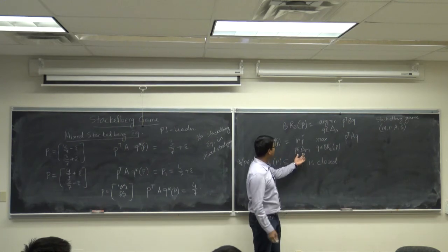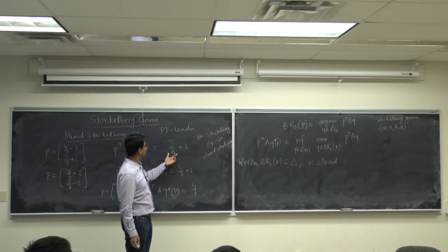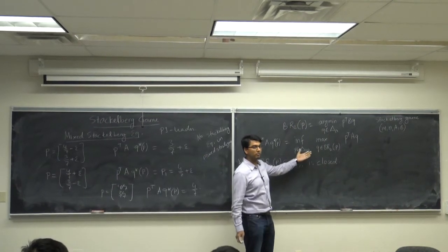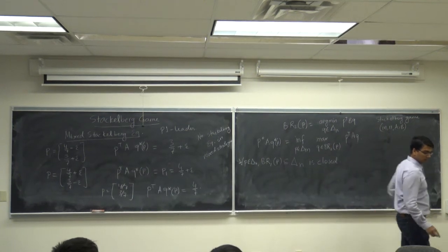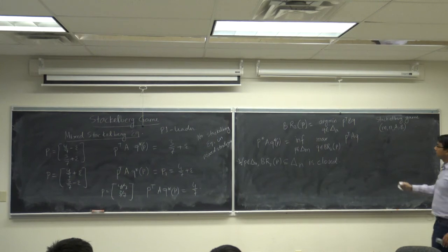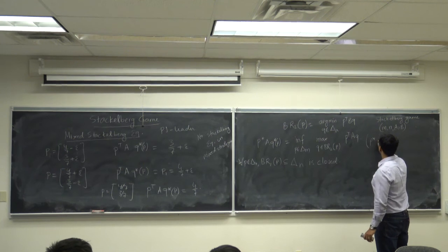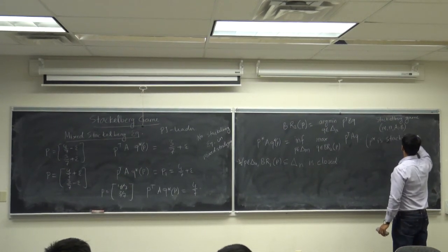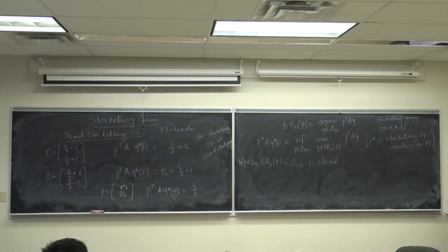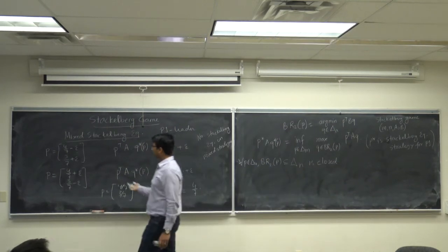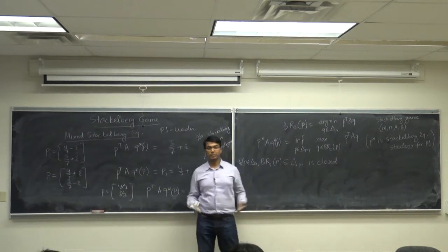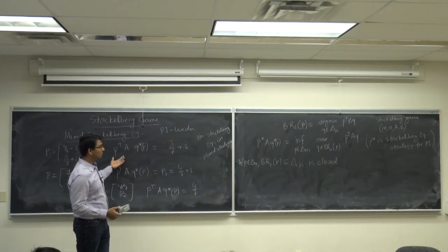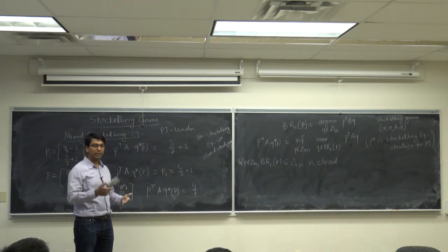In the previous example, the infimum was 3/7, but there is no Stackelberg equilibrium because no P* can achieve this infimum — only inf plus a small positive number. P* is a Stackelberg equilibrium strategy for player one if it achieves this infimum. This concept applies to finite games, but can also be used for infinite games, useful in control systems and natural language processing for spam filter design.